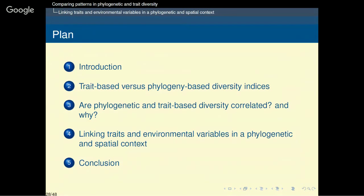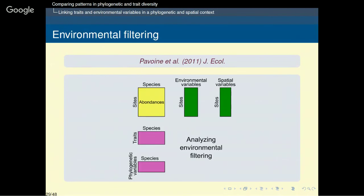In the last part, I will talk about the links between traits and environmental variables in a phylogenetic and spatial context. I will take an example to show how the analysis of traits can be done with regards to the phylogeny, instead of replacing traits by phylogenetic information. The basic data for this approach are a matrix giving the abundance or presence-absence of species in sites, with sites described in terms of environmental and spatial variables, while species are described in terms of functional traits and phylogeny. All matrices are analyzed using ordination approaches.